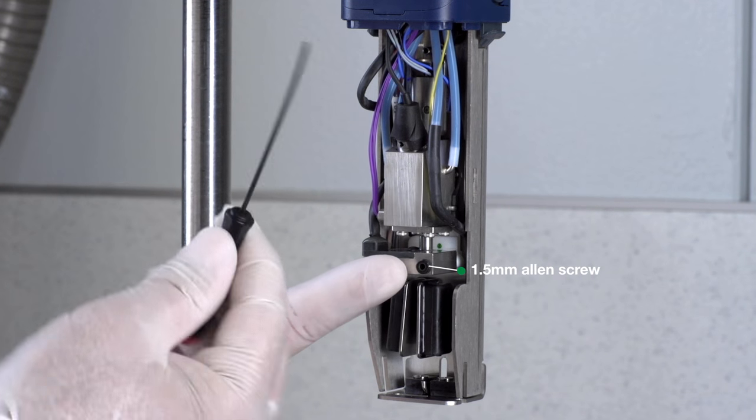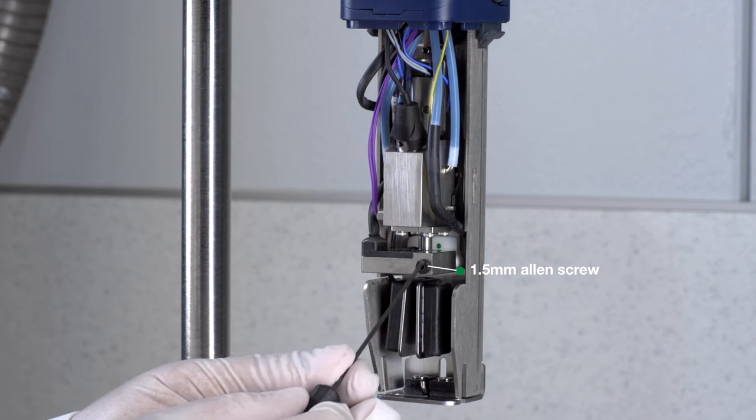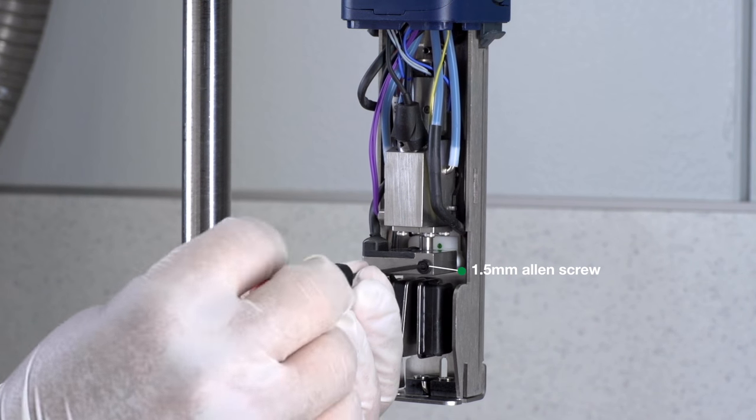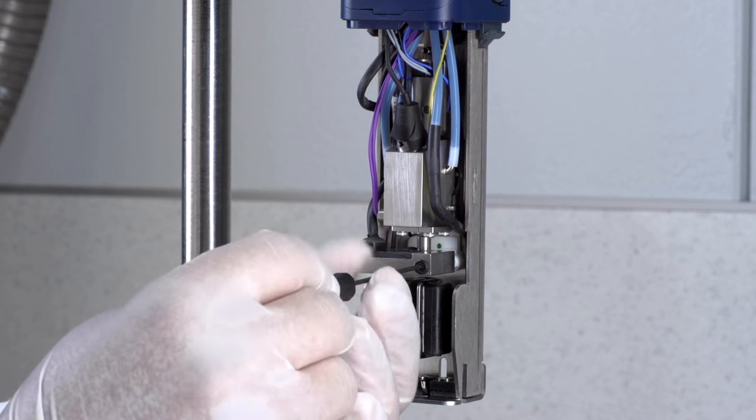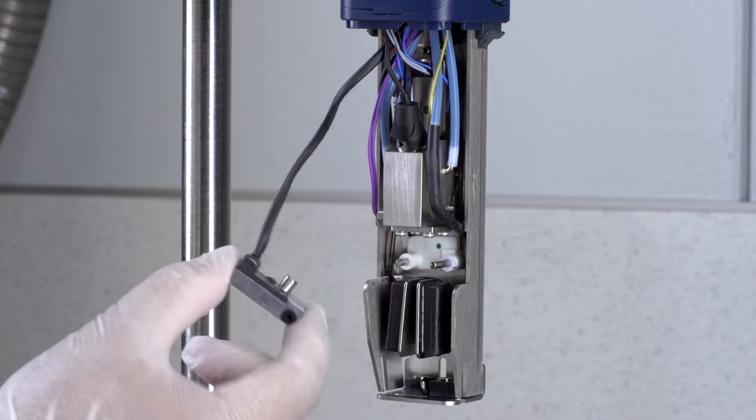Now remove the charge electrode by unscrewing the 1.5mm allen screw on the right-hand side. Carefully slide the charge electrode out of the way.